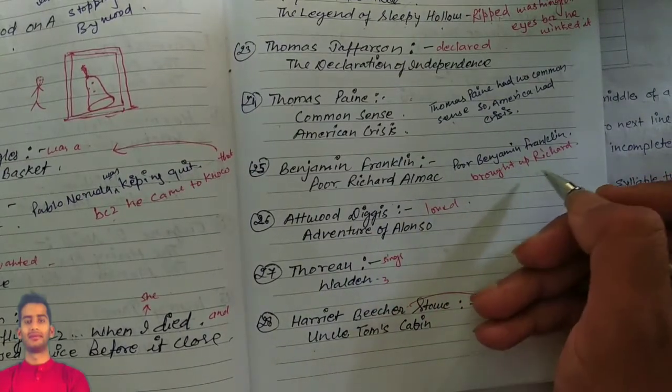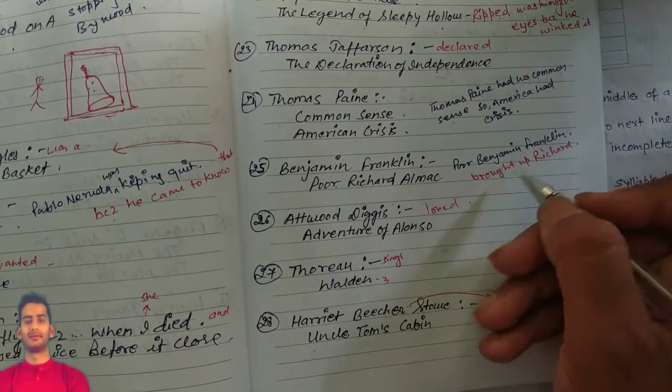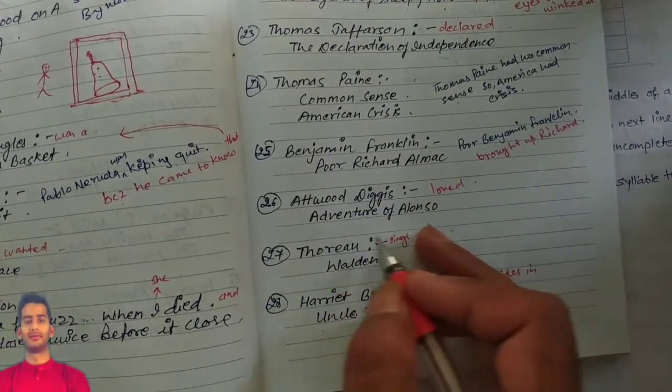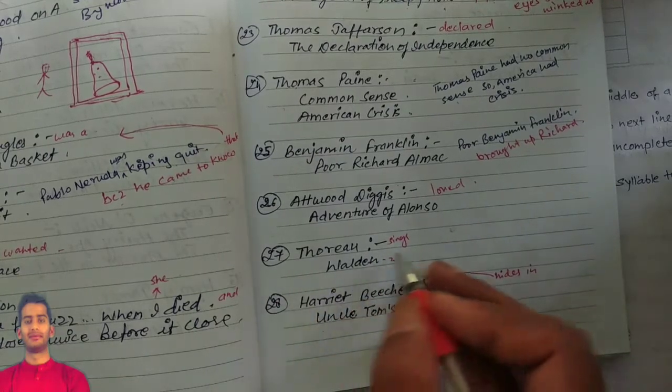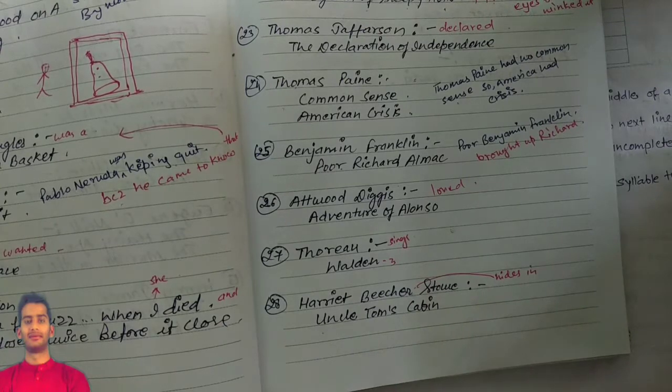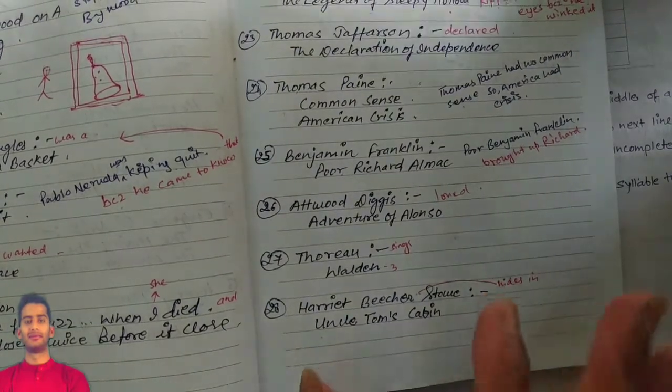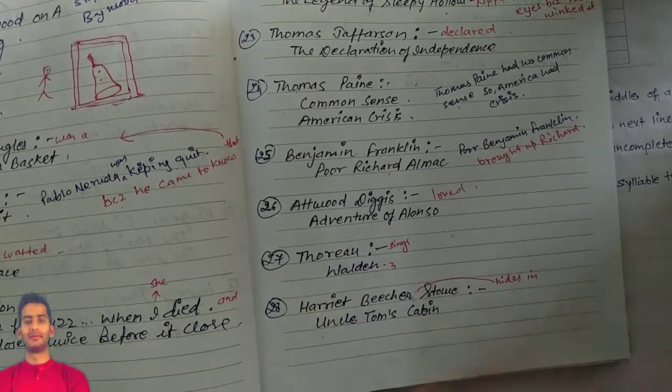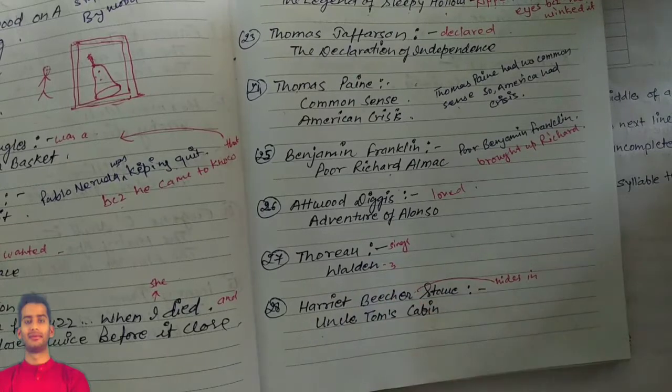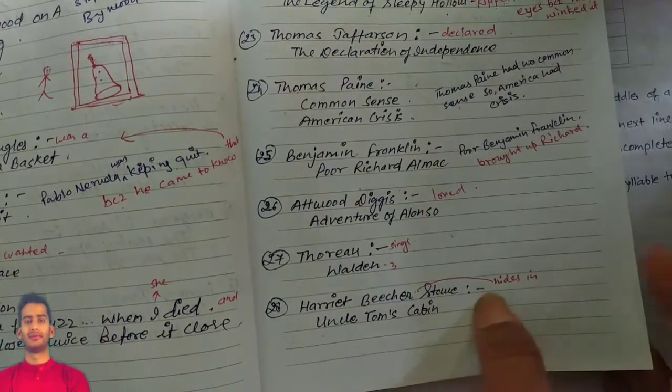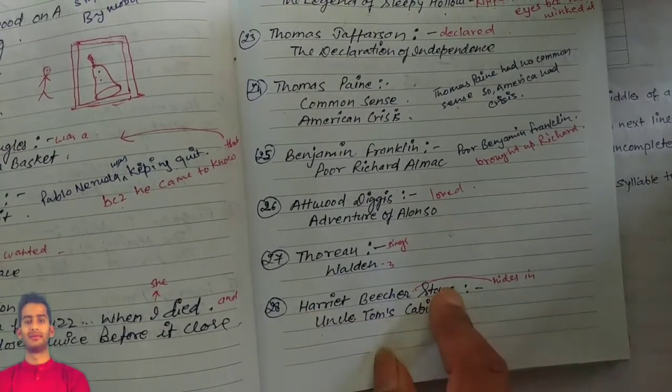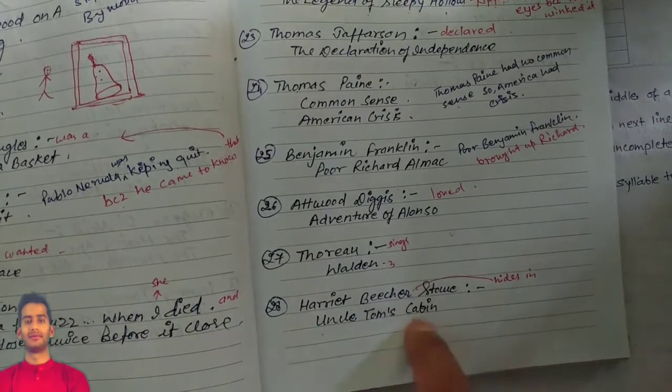Diggis loved Adventures of Alan. Thoreau sings Walden, Walden, Walden. Thoreau sings Walden, Walden, Walden. I used to sing like this and I remember, I never forget this work. Thoreau sings Walden and before that it was too hard to remember that Thoreau wrote Walden. Harriet Beecher Stowe hides Uncle Tom's Cabin. So Harriet Beecher Stowe hides in Uncle Tom's Cabin. In Uncle Tom's Cabin, who hides? Harriet Beecher Stowe.